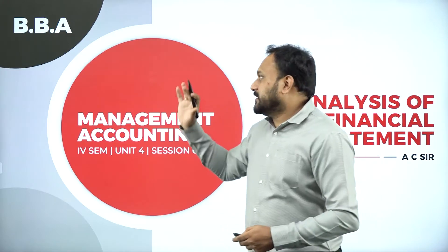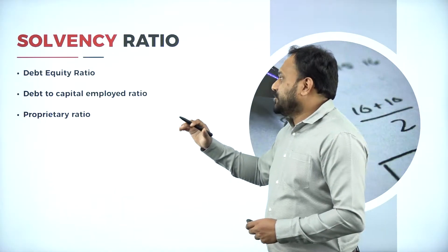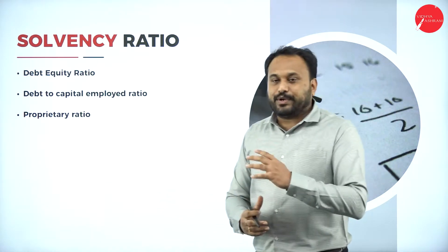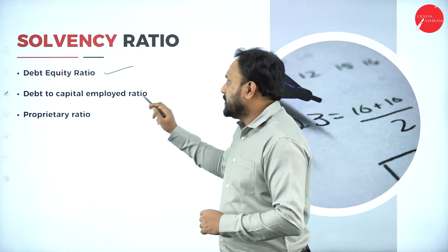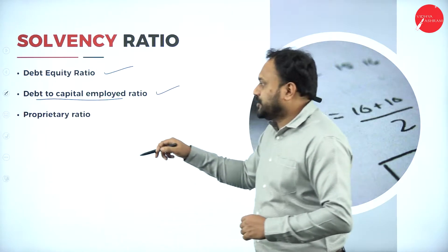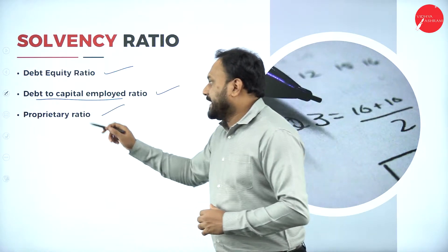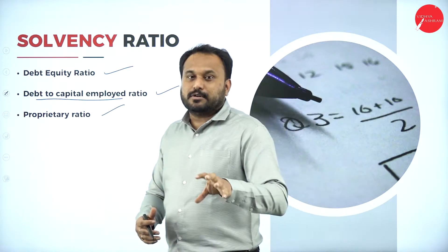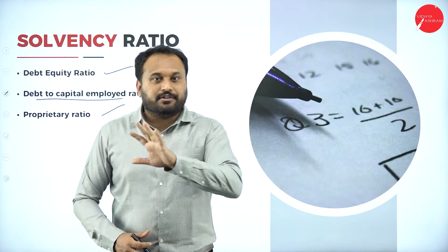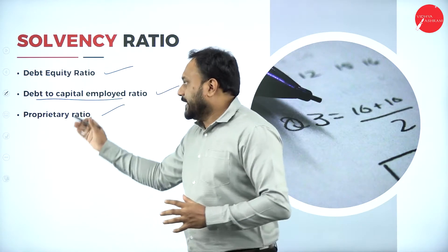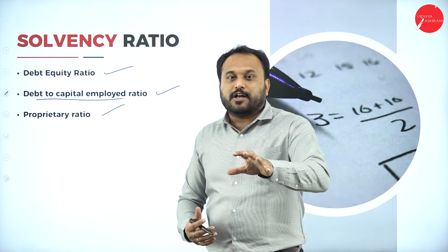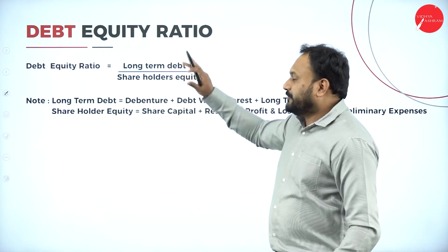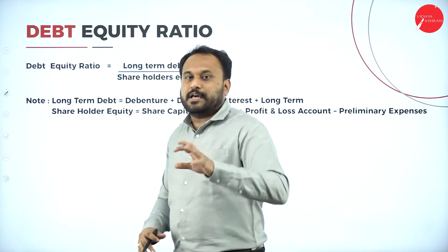Let's start the session with solvency ratios. In the solvency ratio we have three types: one is the debt equity ratio, second is the debt to capital employed ratio, and the last one is the proprietary ratio. I'll tell you how to remember these, but please do understand — if we just memorize, we will forget. I call my approach the Abhilash Chandra Tricks.